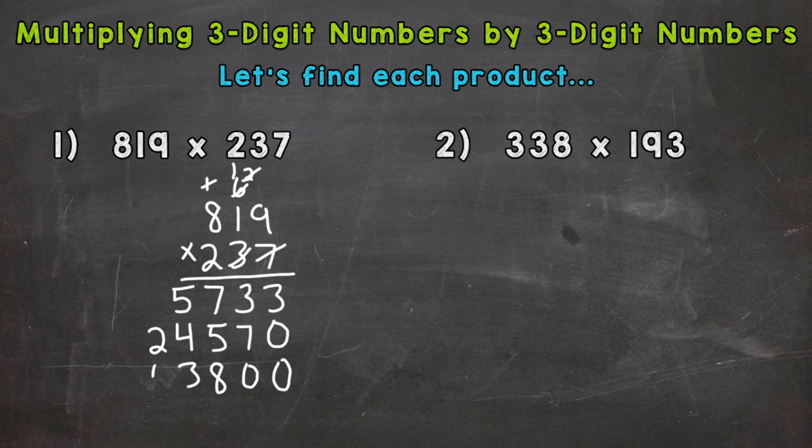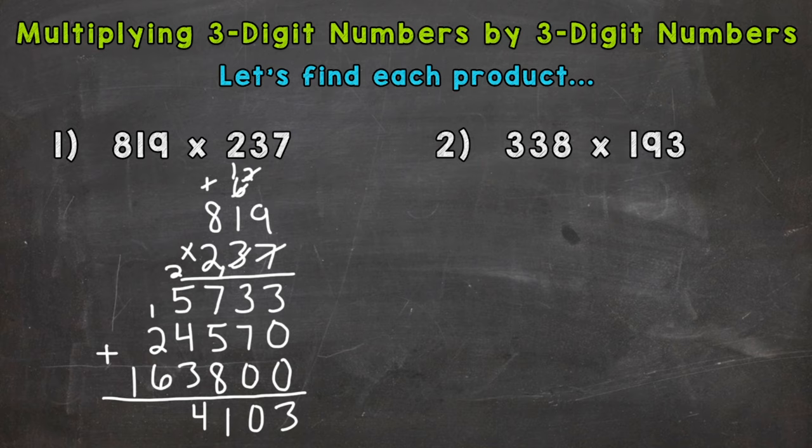Now we can add all of these up. These are our partial products, so add them up and we get our final answer. 3 plus 0 plus 0 is 3. 3 plus 7 is 10, carry our 1. 1 plus 7 is 8 plus 5 is 13 plus 8 is 21. 2 plus 5 is 7 plus 4 is 11 plus 3 is 14. 1 plus 2 is 3 plus 6 is 9, and we end with a 1. We get a final answer of 194,103.